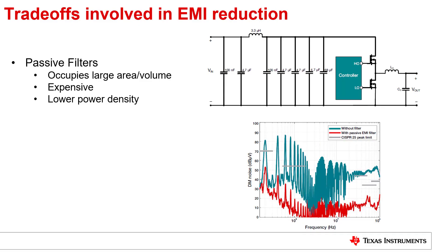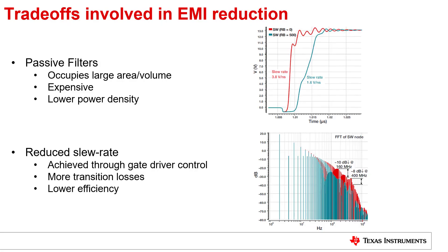In conventional designs, the EMI generated by the switching converters is mitigated using two main methods, both of which have an associated penalty. To deal with the low frequency emissions and meet appropriate standards, large passive filters are placed at the input of the switching converters, leading to a more expensive, less power-dense solution. The high frequency emissions, on the other hand, are typically mitigated by slowing down the switching edges by effective gate drive design. While this helps in reducing the EMI in the greater than 100 megahertz band, the reduced edge rates lead to increased switching losses and hence a lower efficiency solution.